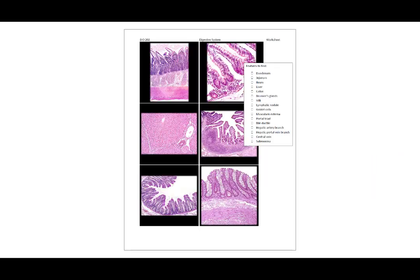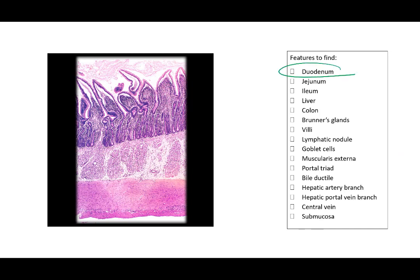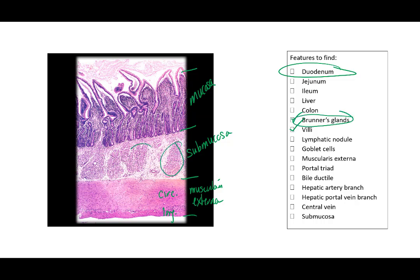On the next page of the worksheet, we will start with the duodenum. In this image of the duodenum, we can see villi — these individual things are villi. That would also mean this region is our mucosa. That means this region is going to be the submucosa, this here is our circular muscle, and this is our longitudinal muscle, which means it's the muscularis externa. The most important part I want you to know are the Brunner's glands, which are located here and found within the submucosa.